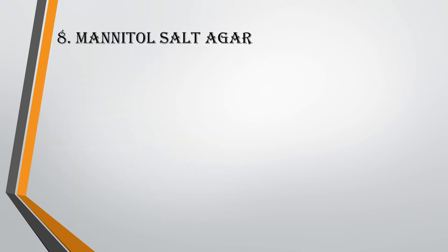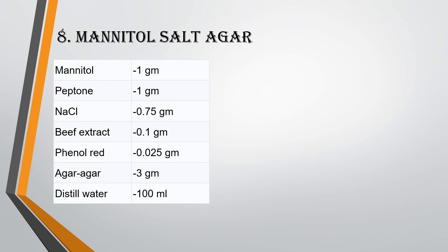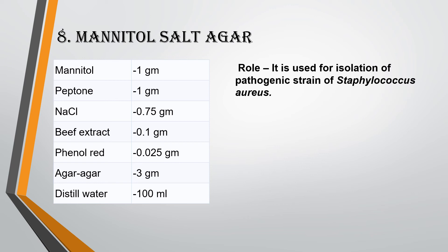The eighth medium is Mannitol Salt Agar, also prepared for 100 ml. Components are: Mannitol 1 g, Peptone 1 g, NaCl 0.7 g, Beef Extract 0.1 g, Phenol Red 0.025 g, Agar Agar 3 g, and Distilled Water 100 ml. It is used for the isolation of pathogenic strains of Staphylococcus aureus.